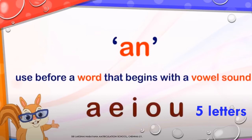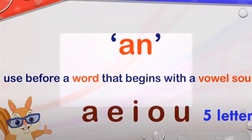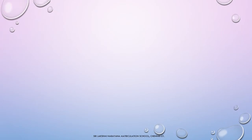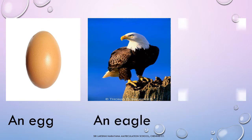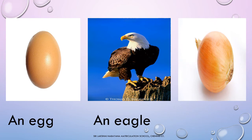Children, the vowel letters are A, E, I, O, U. Let's see some examples for vowels: an egg, an eagle, an onion. The words start with a vowel letter, so we should use article 'AN' before the word.